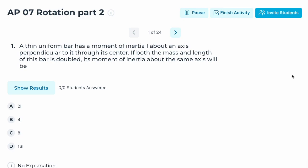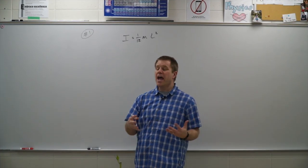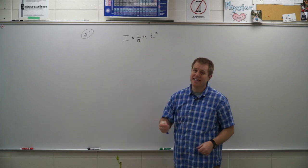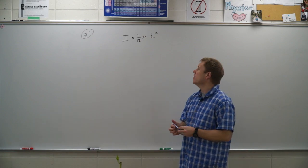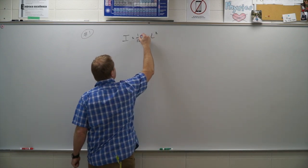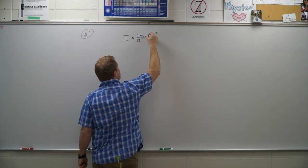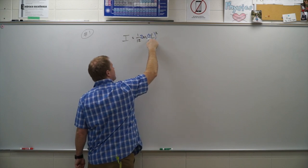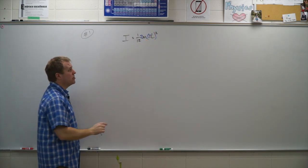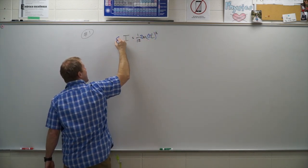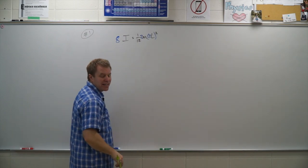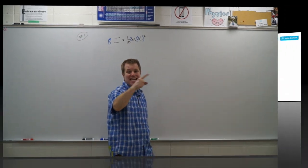Let's take a look. When we double the mass and double the length, length is a squared term, so we have a factor of two from mass and a factor of four from length squared. That gives us eight times the moment of inertia. Correct answer: C.